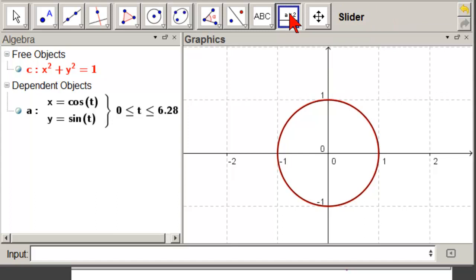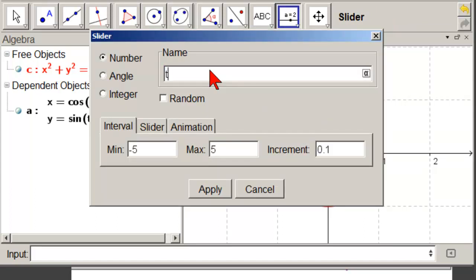We take the slider tool and make a slider for t. So we're going to call it t. It's going to go from 0, tab over, raise 5, 2 times pi. That's good. So let's click on apply.